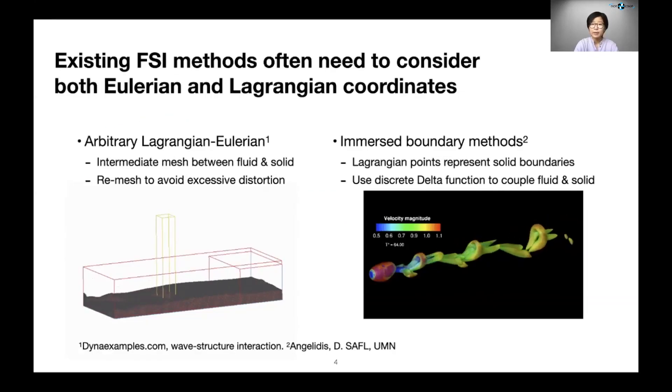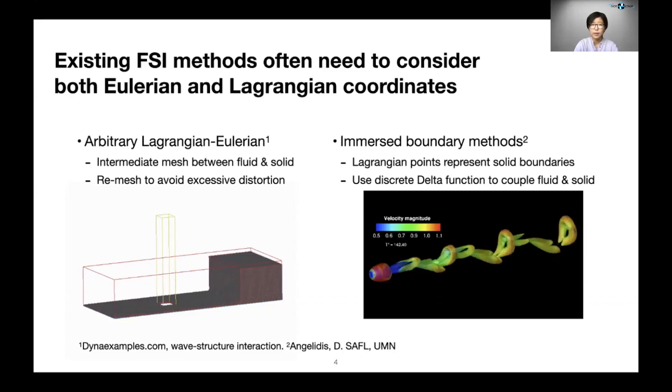Now you can imagine simulating both fluid and solid using the same method poses a challenge. That is the dilemma of choosing between Eulerian or Lagrangian coordinates. If we don't want to commit to either of them, then we must come up with a way of communicating between these two perspectives. So there are existing solutions for fluid-structure interaction simulations.